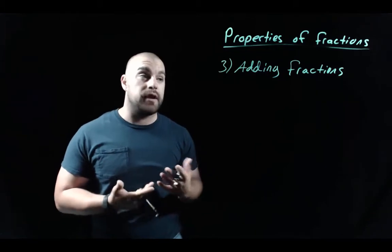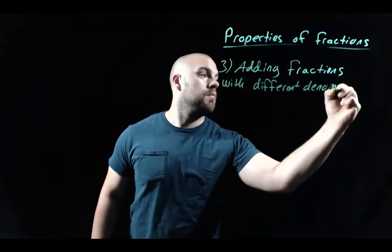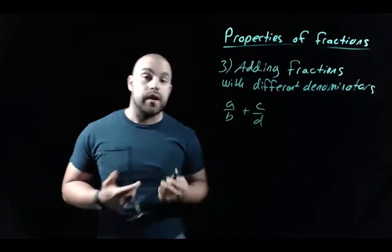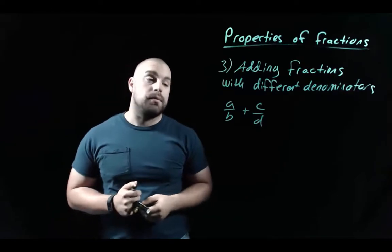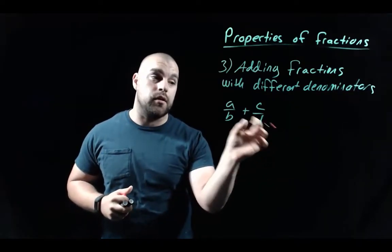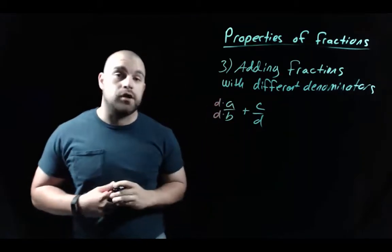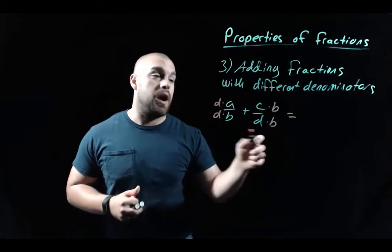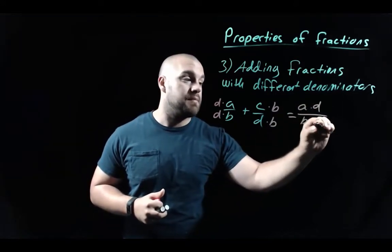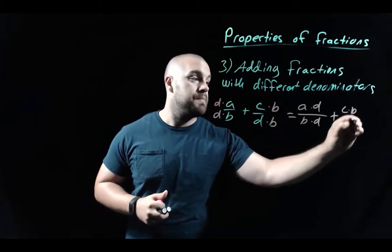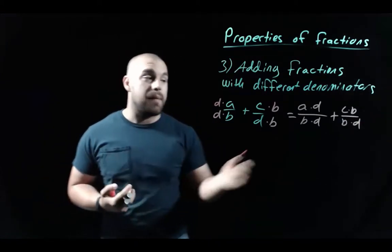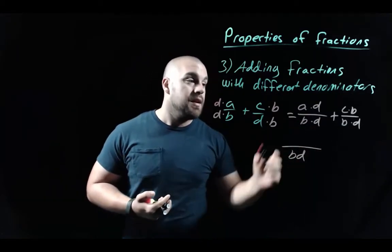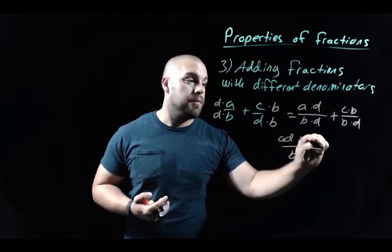If we're adding fractions with different denominators — say a over b plus c over d — there's extra work needed. We take the d denominator and multiply it on top and bottom of the left fraction, and take the b denominator and multiply it on top and bottom of the right fraction. This gives us ad over bd plus cb over bd, and now that we have a common denominator of b times d, we can add the fractions.